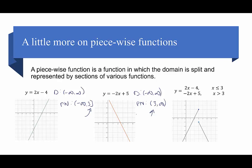Here we have the two pieces of the graph. We have 2x minus 4 stopping at 3, representing all numbers smaller than 3. Notice we use an open circle to represent that the second equation, negative 2x plus 5, starts at 3 but is not included. It goes down where x values are bigger than 3. This is an example of a piecewise function.